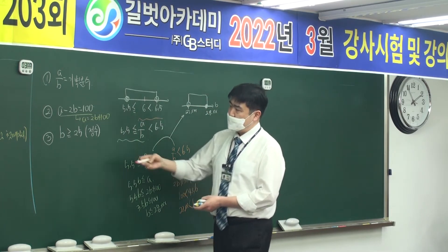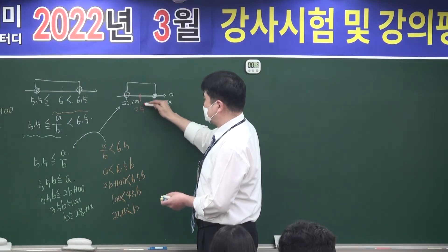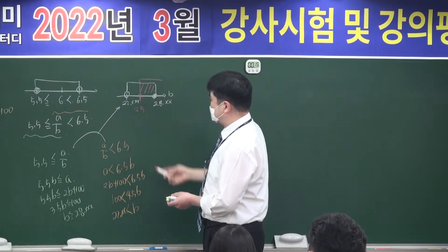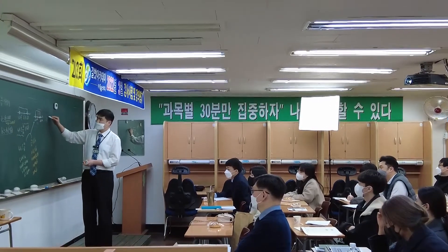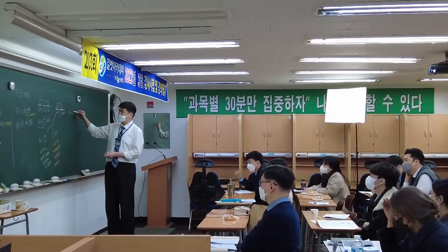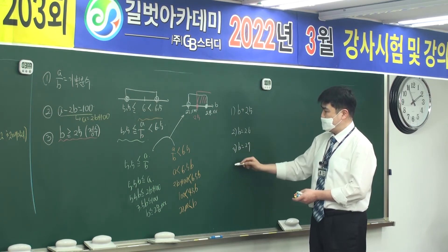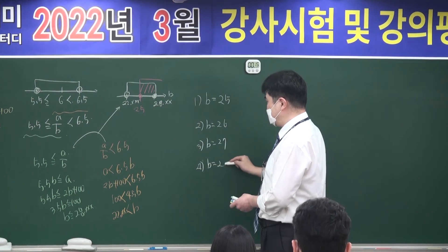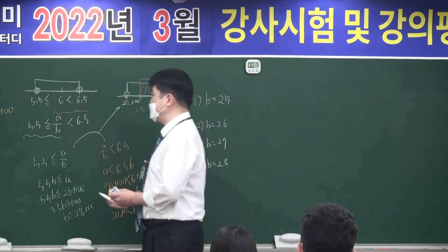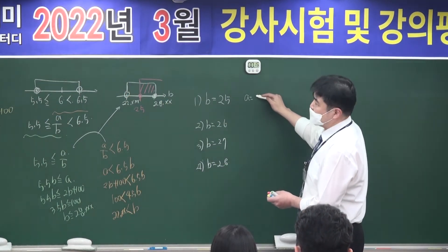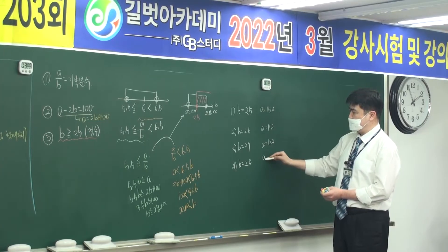The value of B is 25. Let's take a look: first B is 25, second B is 26, third B is 27, and fourth B is 28. Correspondingly: A is 150, A is 152, A is 154, A is 156.